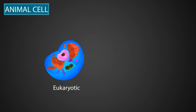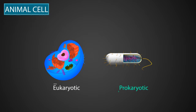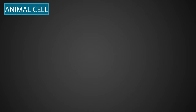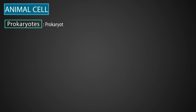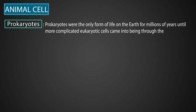All types of cells are either eukaryotic or prokaryotic. Prokaryotes, or prokaryotic cells, were the only form of life on Earth for millions of years, until more complicated eukaryotic cells came into being through the process of evolution.